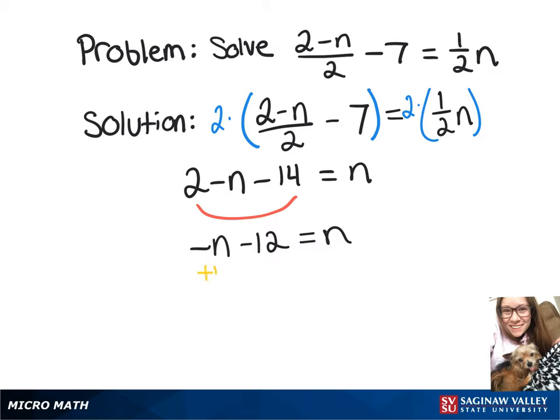Now we can add n to both sides, so now we've got -12 = 2n.